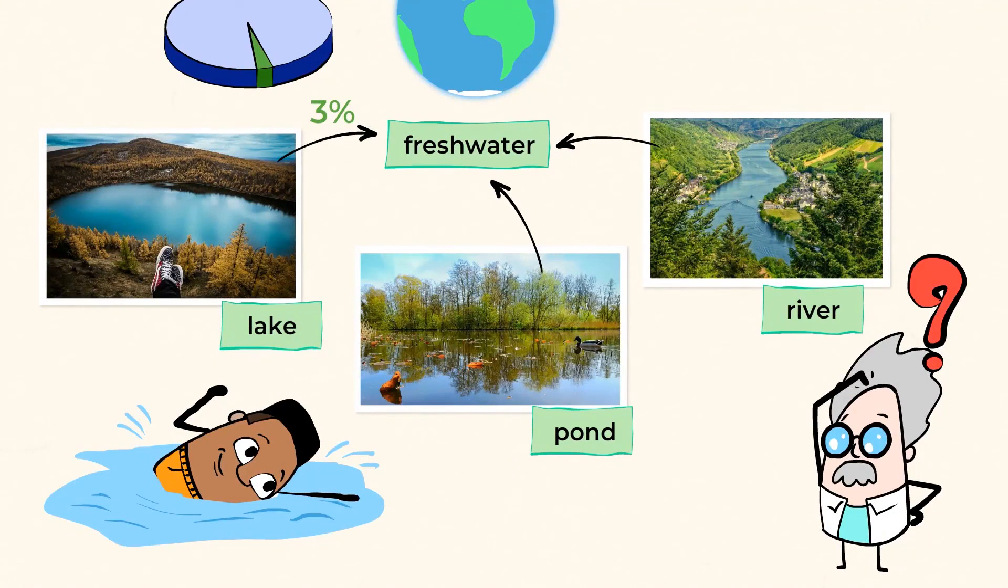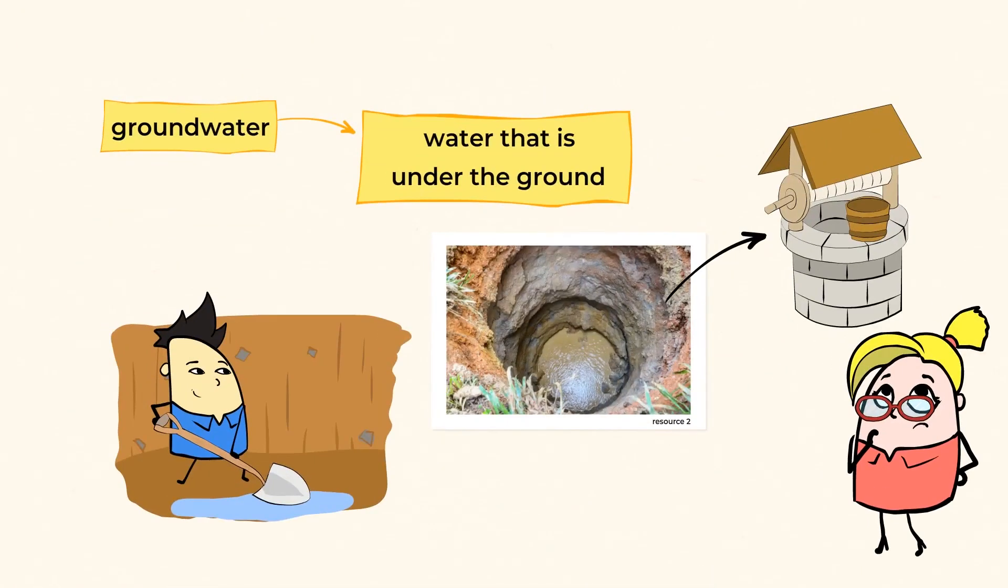can be found in rivers, lakes, ponds, and streams all over the world. It can also be found under the ground, which makes it more difficult to get to. Other freshwater is frozen in glaciers.